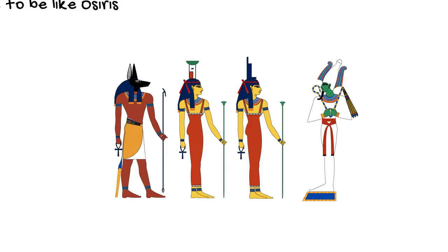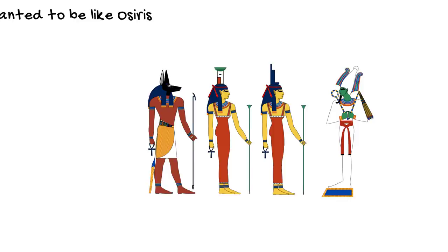Once Osiris' body was repaired and wrapped up, like a mummy, Isis was then able to bring Osiris back to life so that he could become the eternal king of the afterlife.